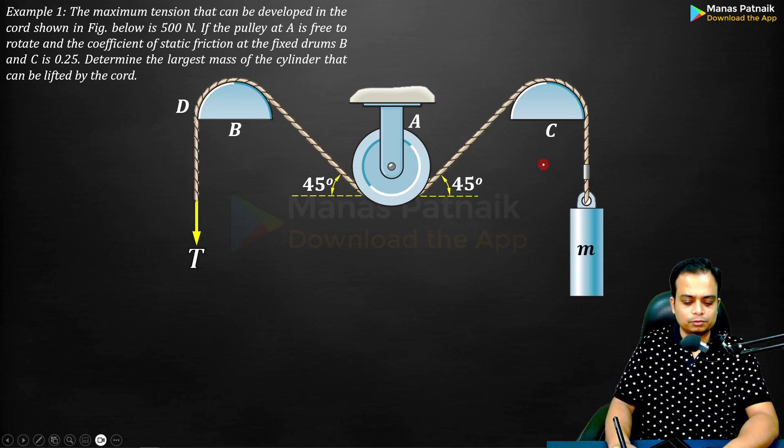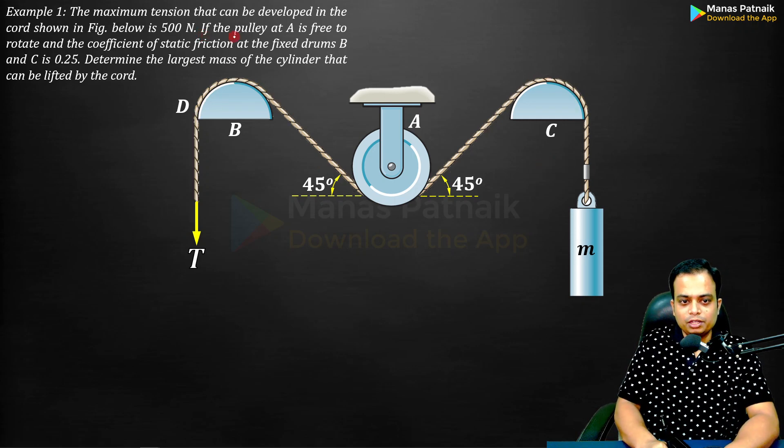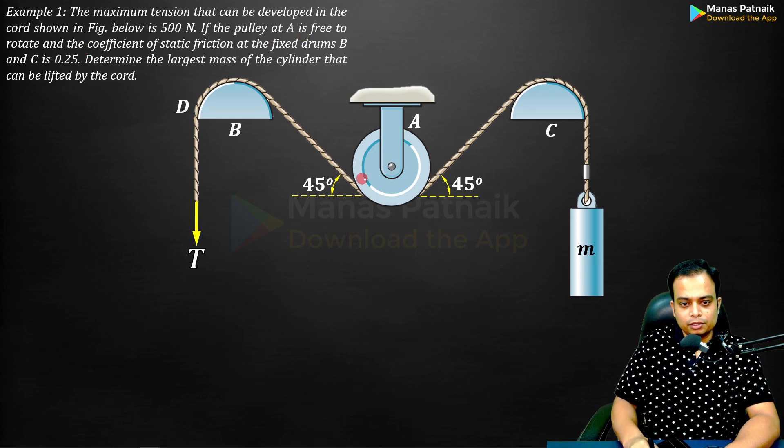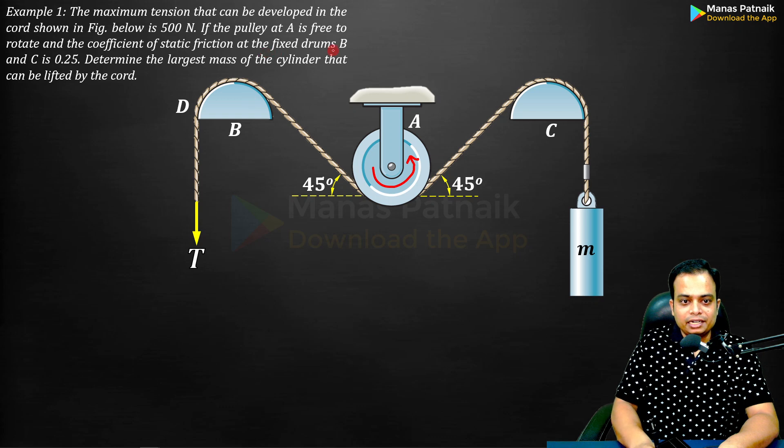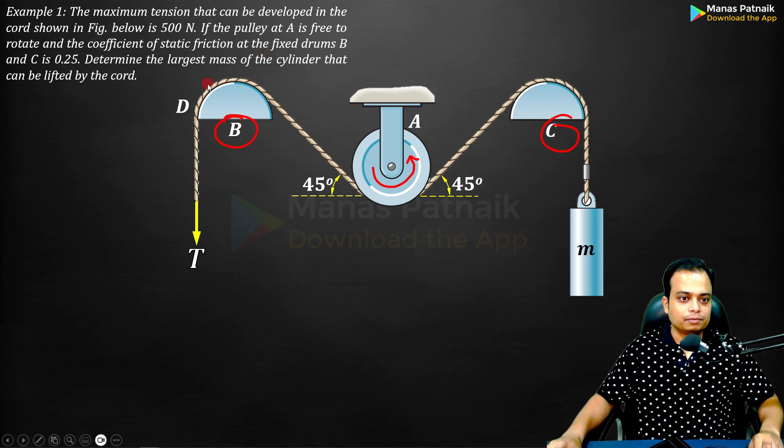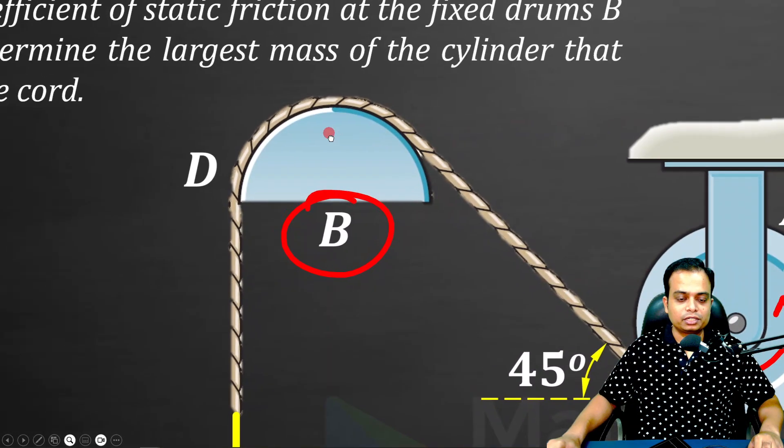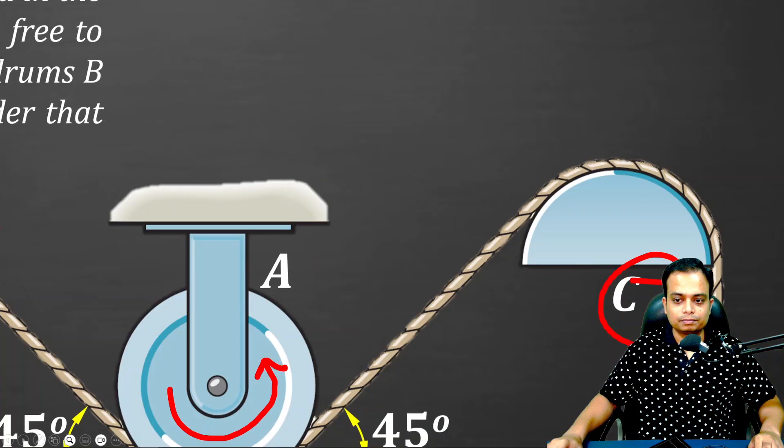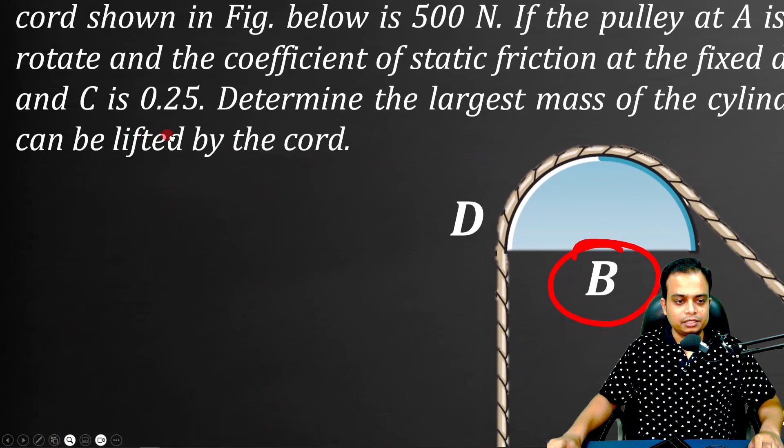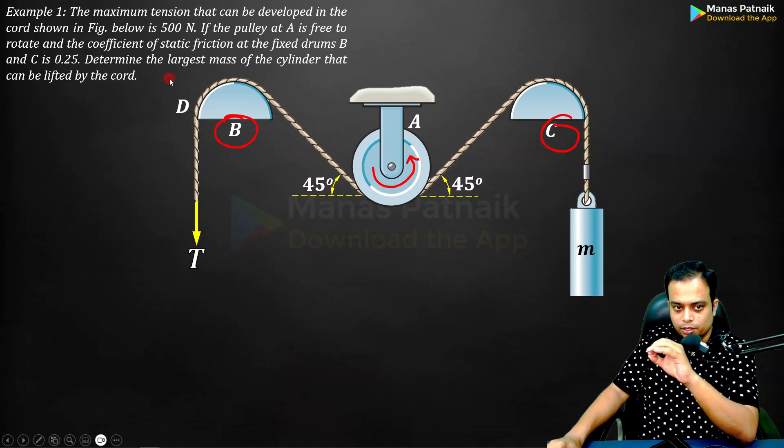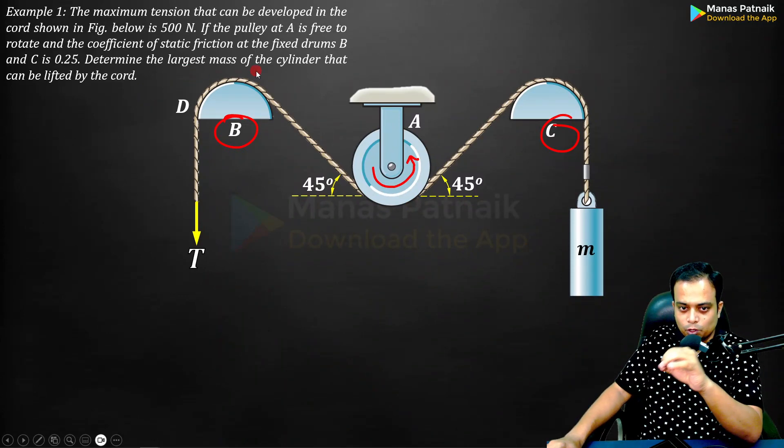If the pulley at point A is free to rotate, and the coefficient of static friction at the drums B and C is equal to 0.25, what we need to work out is the largest mass of the cylinder that can be lifted by the chord.